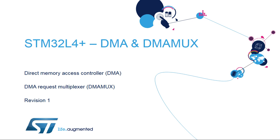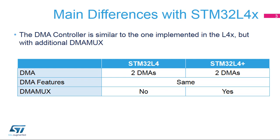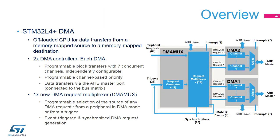Welcome to the presentation of the STM32L4 Plus Direct Memory Access Controller, or DMA. It covers the main features of the DMA controller module, enhanced by the new DMA MUX module. The DMA controller embedded in STM32L4 Plus is similar to the one implemented in the STM32L4, but with an additional DMA MUX. The main feature of the DMA is to offload the CPU for data transfers from any memory-mapped source towards any memory-mapped destination. For more information about the memory mapping and specifically addressable space for each DMA controller, refer to the L4 Plus AHB Bus Interconnect.